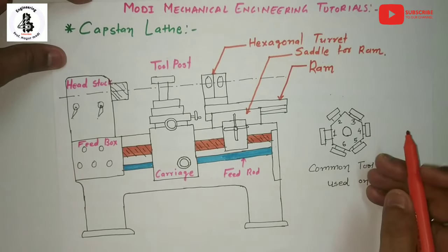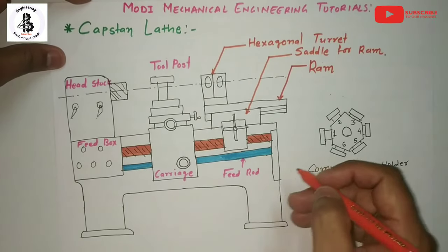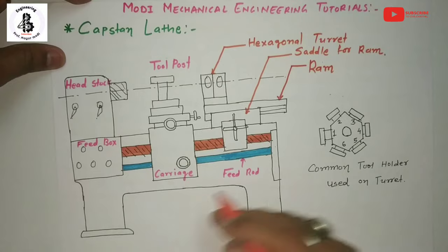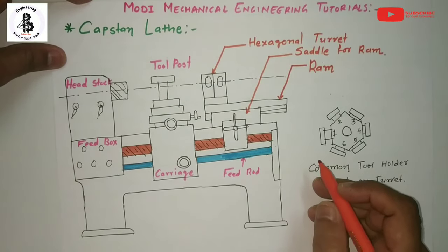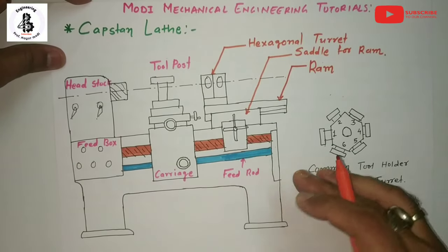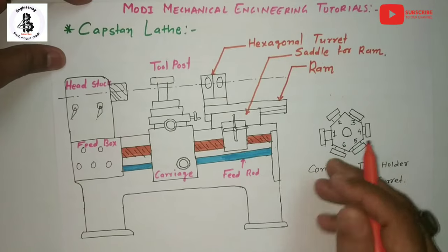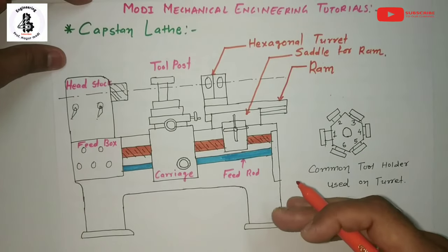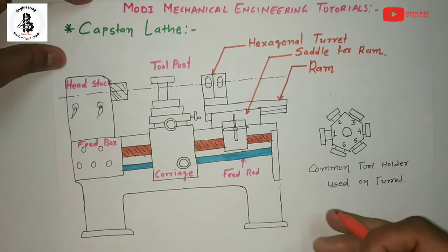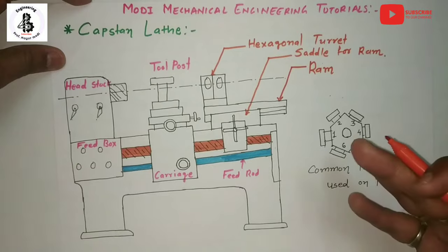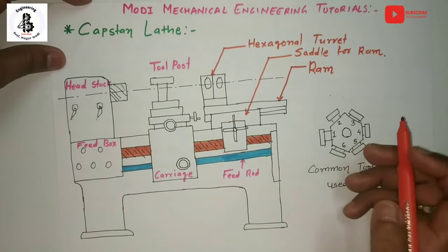By construction, the capstan lathe is quite similar to the engine lathe. Some modifications are performed on the engine lathe to make it a capstan lathe. Basically, these modifications increase the features or productivity in production.